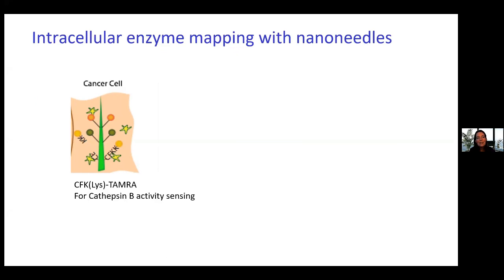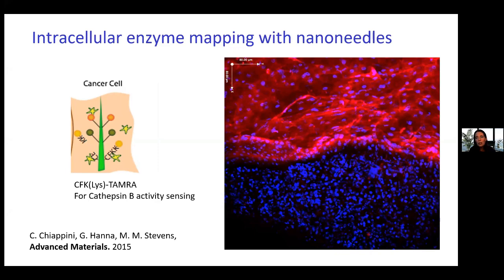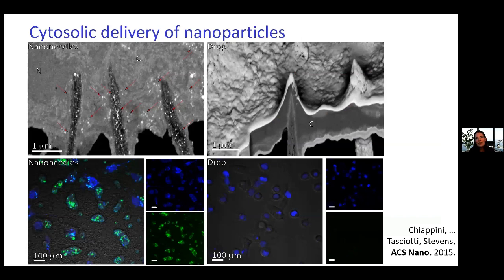We also mapped intracellular enzyme activity. In particular, we were interested in a protease called Cathepsin B, which is upregulated in cancer cells. We functionalized the needles with short peptides with a fluorophore on the end that could be specifically cleaved by this protease. We applied this to real human tissue taken from cancer patients after surgery — with a fantastic surgeon called George Hannah — and were able to see that certain areas had higher enzyme activity, helping identify tumor margins down to more or less single-cell resolution.